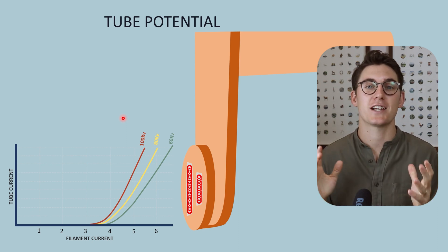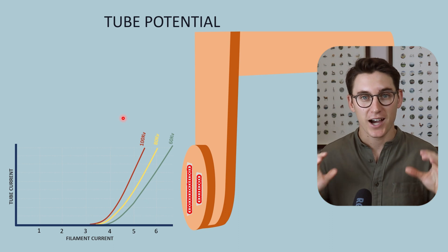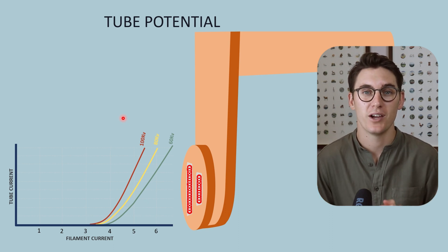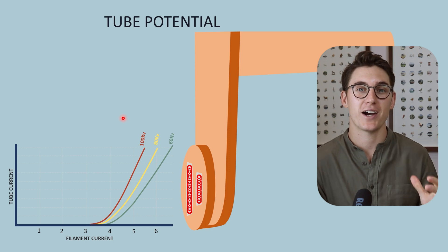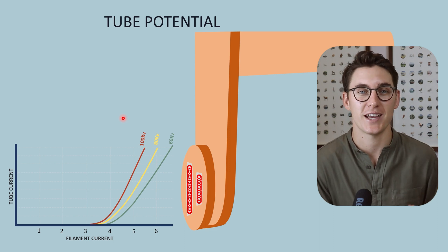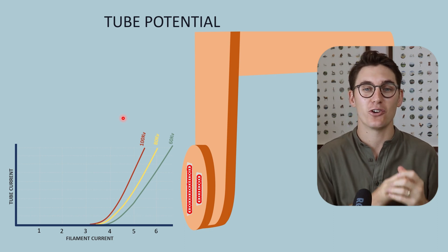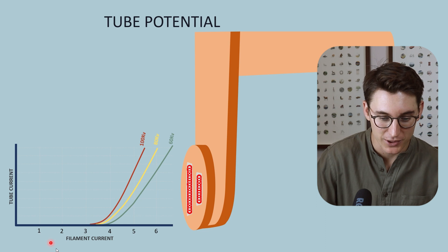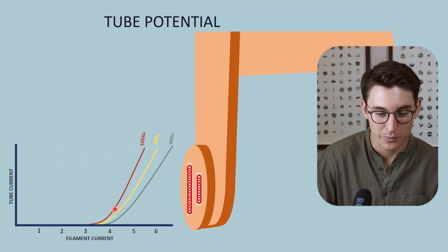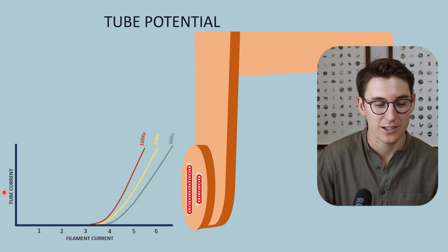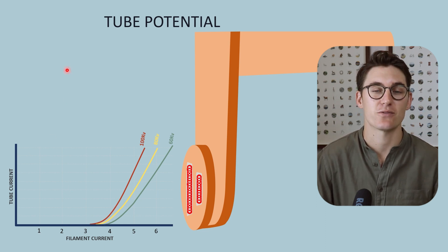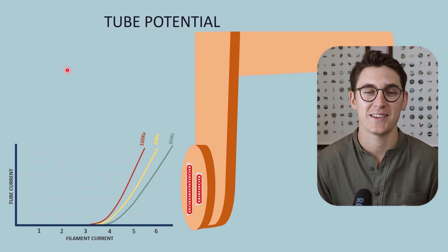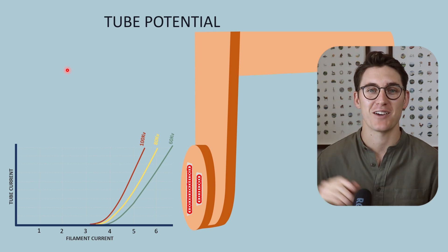If you are studying for exams, there is a question bank linked in the description below. We are now going to move to our final component of the X-ray circuit — the filament circuit — where we can manipulate filament current and also increase the number of electrons flowing from our cathode to our anode.